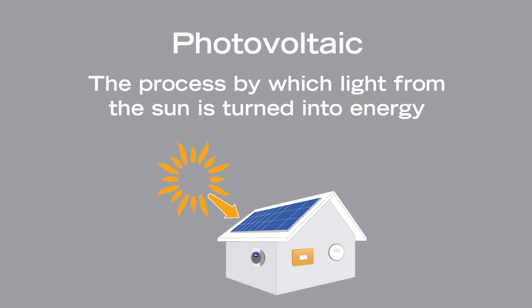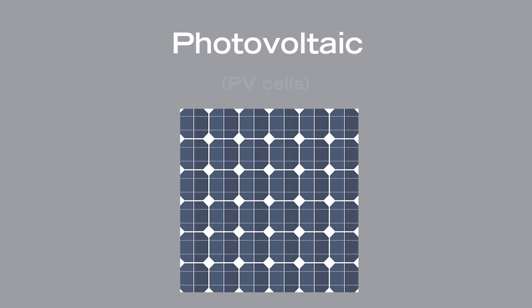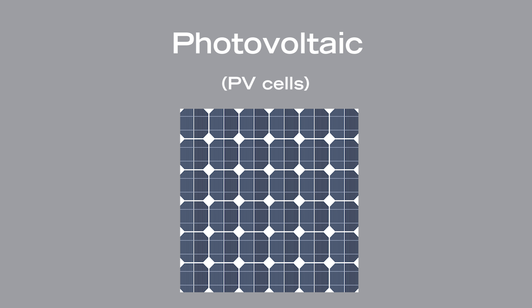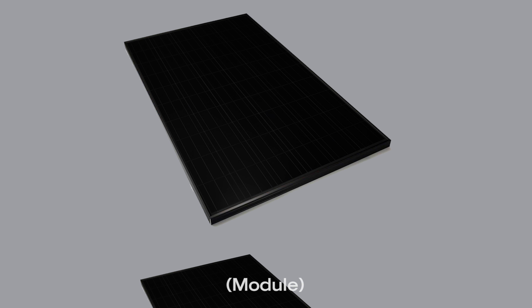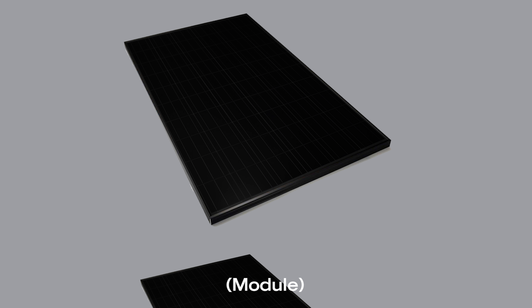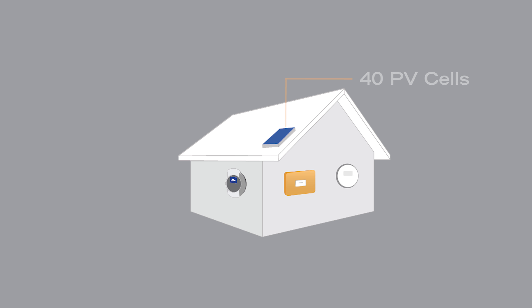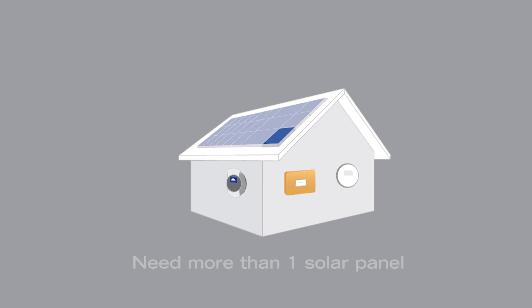The term photovoltaic refers to the process by which light from the Sun is turned into energy. These photovoltaic, or better known as PV cells, connected together make up a solar panel, sometimes also referred to as a module. A typical solar panel consists of approximately 40 PV cells.